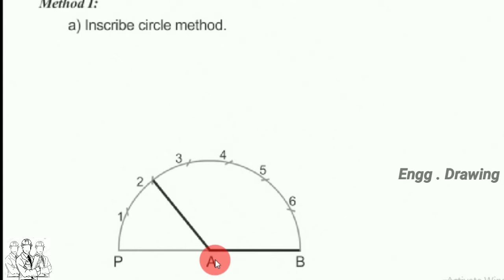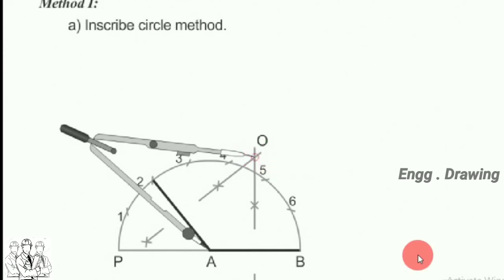Inscribe circle method. Draw perpendicular bisectors of A2 and AB intersecting each other at O. With center O and radius OA, describe a circle.